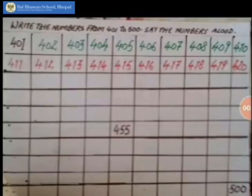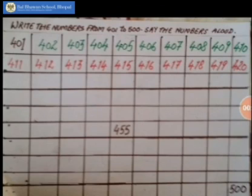Now children, let's count after 400 and do another grid that is given in your content book. So let's count together: 401, 402, 403, 404, 405, 406, 407, 408, 409, 410. Count with me — after 410: 411, 412, 413, 414.